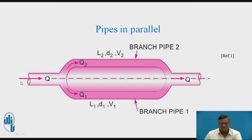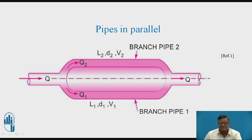In the diagram you can observe: if the discharge through the main pipe is Q, this discharge gets divided into two. Through branch pipe number one, discharge is Q1; through branch pipe number two, discharge is Q2. The parameters for branch pipe number one are L1, D1, and V1, corresponding to length, diameter, and velocity of flow. For branch pipe number two, it is L2, D2, and V2. Again Q1 and Q2 meet, and we have total discharge Q as before.